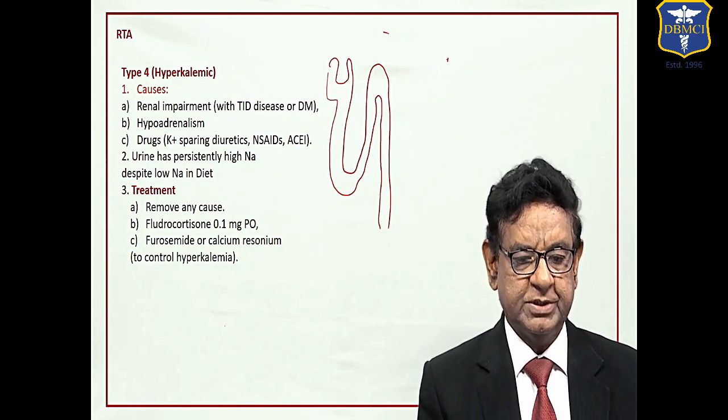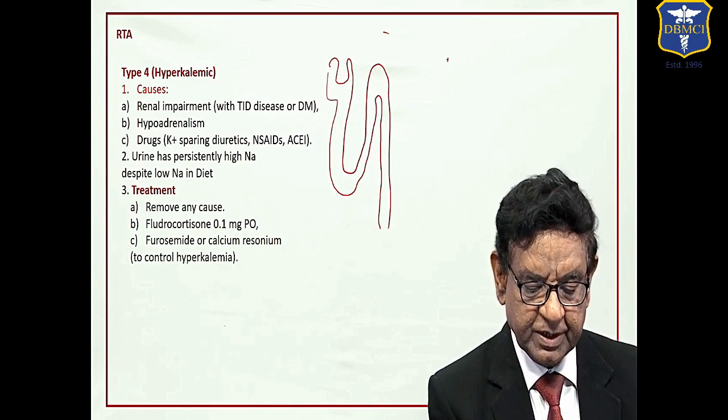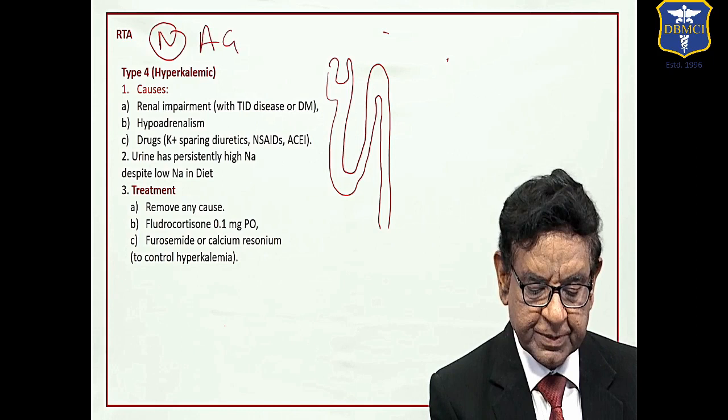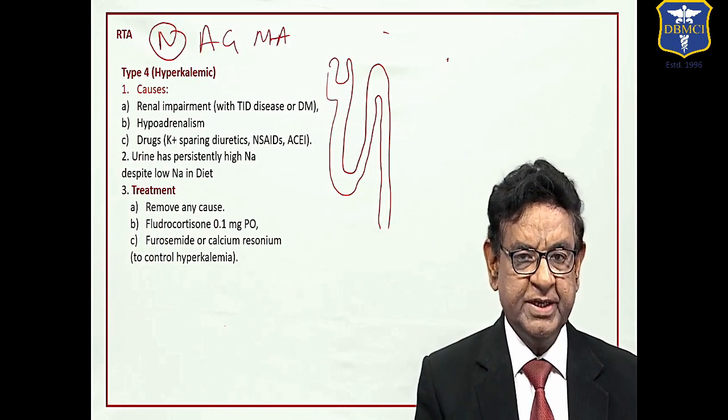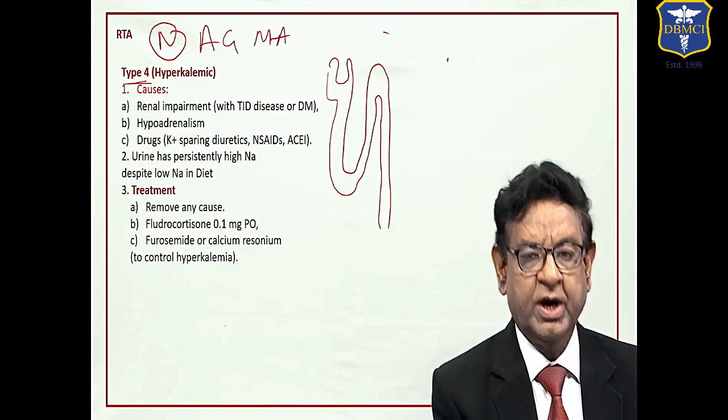Renal tubular acidosis. In this case we have a normal anion gap metabolic acidosis. There are different types of RTAs.